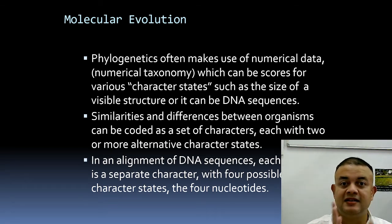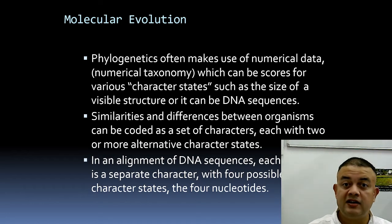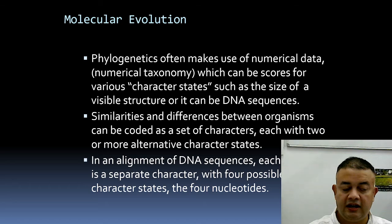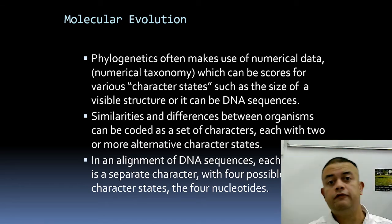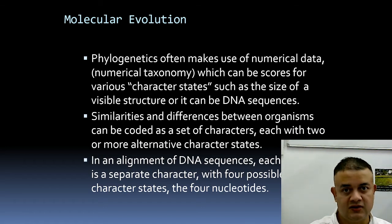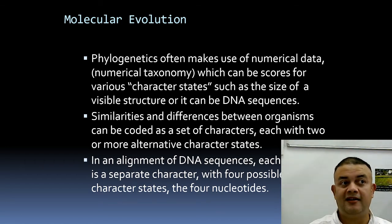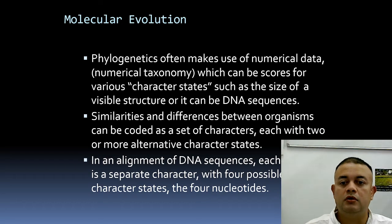There is no ambiguity between nucleotides — no 'in between A and G' confusion — making DNA highly reliable. Similarities and differences between organisms can be coded as a set of characters, each with two or more alternate states. Another big advantage of DNA sequences is that you get a large number of characters in one go, highly accurate and unambiguous. Morphological traits are harder to collect and may be analogous rather than homologous.